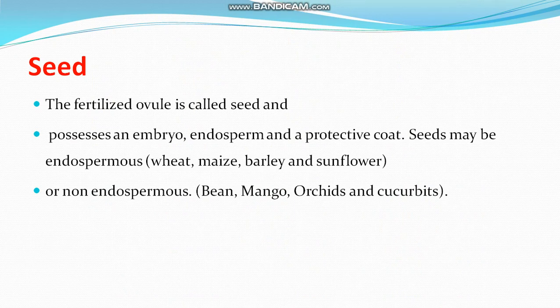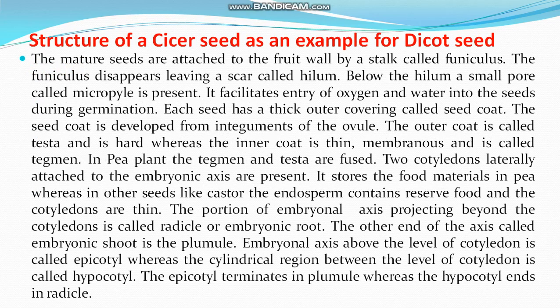The fertilized ovule is called a seed and possesses an embryo, endosperm, and a protective coat. The outer coat is called testa and the inner coat is called tegmen. Seeds may be endospermous — such as wheat, maize, barley, and sunflower — or non-endospermous, such as bean, mango, orchid, and groundnut.